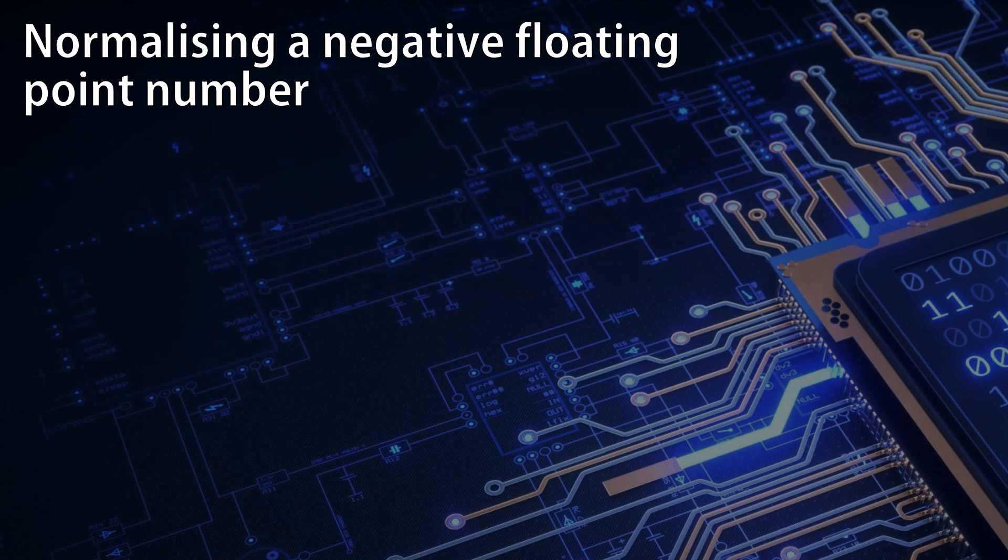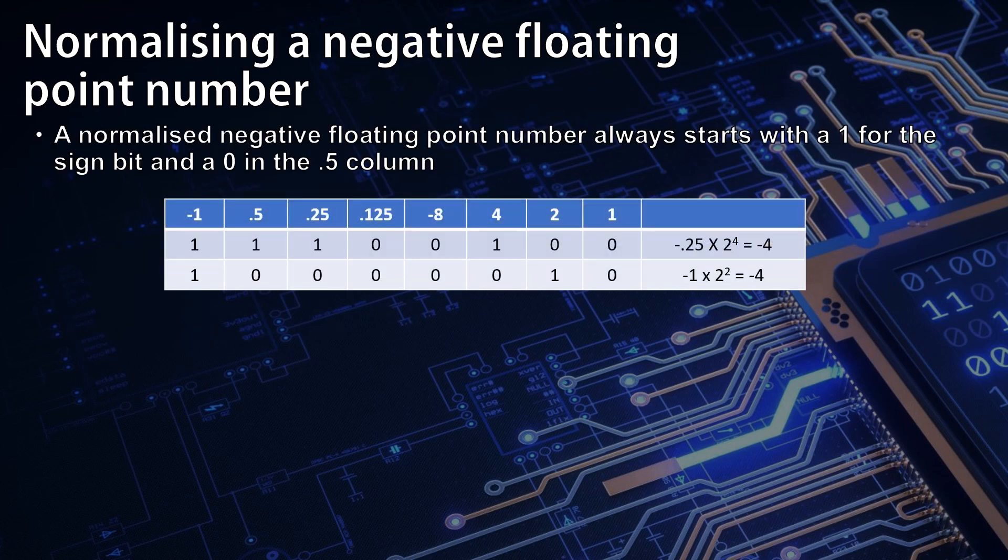A normalized negative floating point number always starts with a 1 for the sign bit and a 0 in the 0.5 column.